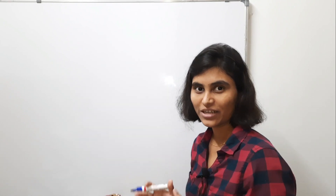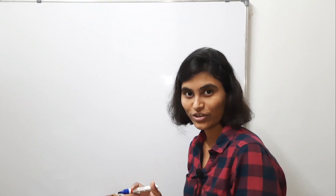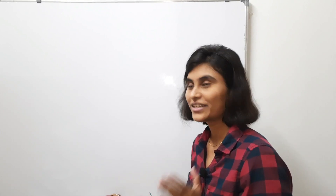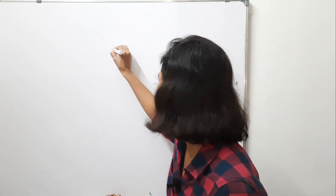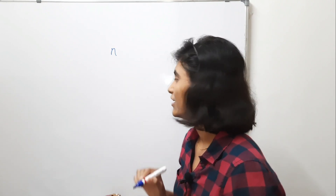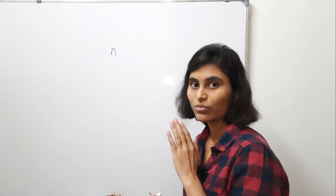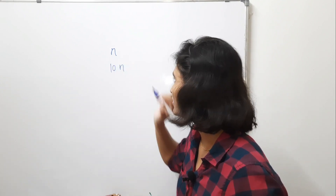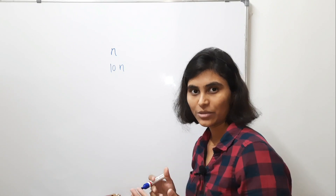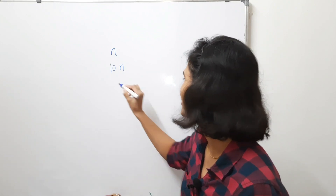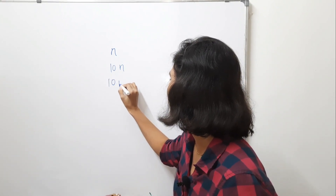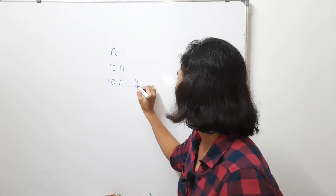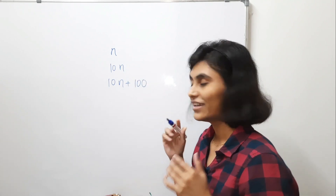I am sure that your answer is correct. So let's see how I am doing this. In the first step, we took any non-zero digit from the mobile number — let's denote this by n. The next thing is we multiply this by 10, so we have 10 times n. Then we add 100, giving us 10n + 100.